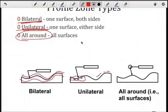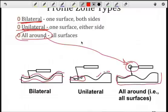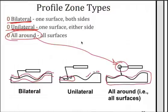And then the all-around is an indication here that we want to control the entire cross-section, not just the curved surface that we're pointing to, as in the previous two examples.